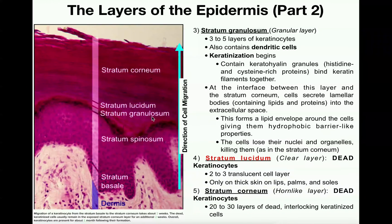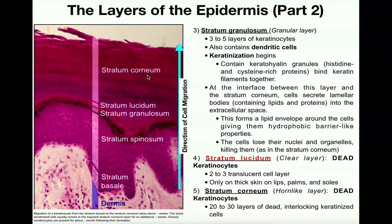For the cells at the interface of the stratum granulosum with either the stratum corneum or the stratum lucidum, those cells are going to secrete lamellar bodies — which contain lipids and proteins — into their extracellular space via exocytosis. The lipids form a lipid envelope around those cells and give them hydrophobic properties, which is very important. This also causes the cells to start to die — they lose their nuclei and their organelles. So in the stratum granulosum, these cells are dying, though not completely dead yet.